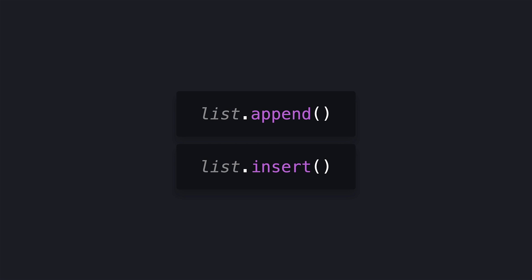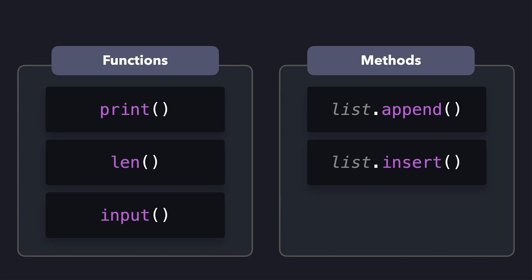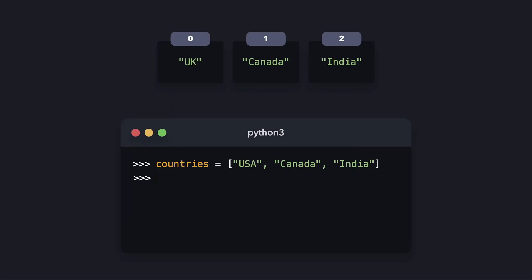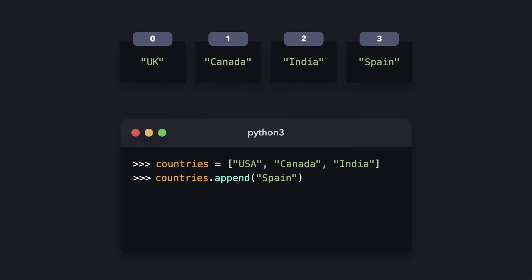In order to change the data in lists, we can also use built-in Python methods. Methods are specific kinds of functions. They behave like a function and look like it, but their purpose is a bit different. Whereas a function acts on its own, a method is owned by the data that it works for. The methods on lists in Python are used to manipulate the lists on which they're invoked. Two important methods are append and insert. With the append method, we can add a new item to the end of the list. With the insert method, we can insert a new item in between values, instead of just at the end of the list.